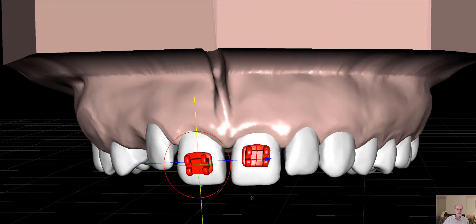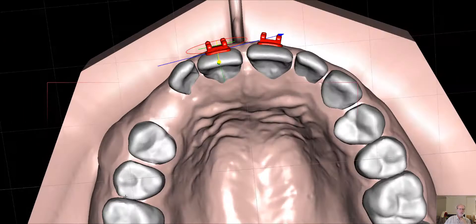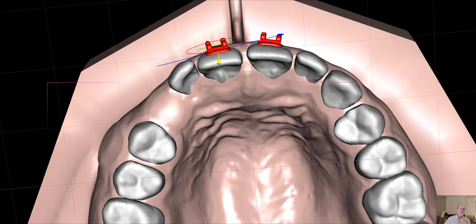Here are two ways of positioning the brackets. This is the central incisor. As we looked before, you want to have the bracket positioned in the center of the tooth.